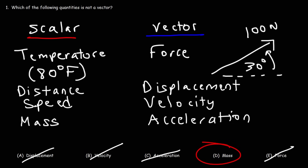For instance, let's say an object has a mass of 10 kilograms. You wouldn't say that the object has a mass of 10 kilograms north — it wouldn't make sense. So mass is a scalar quantity: it has magnitude only, but no direction.